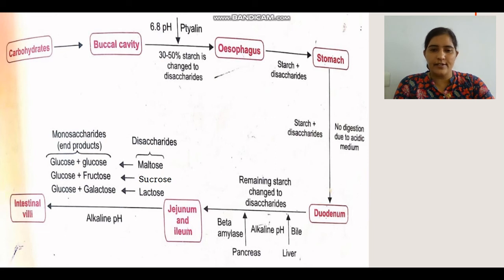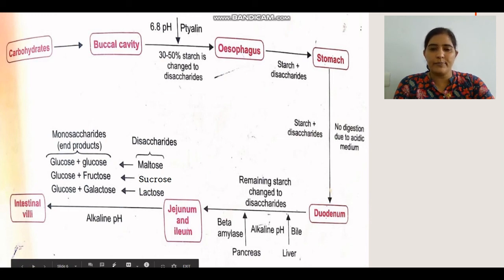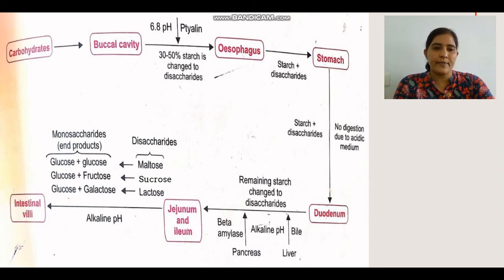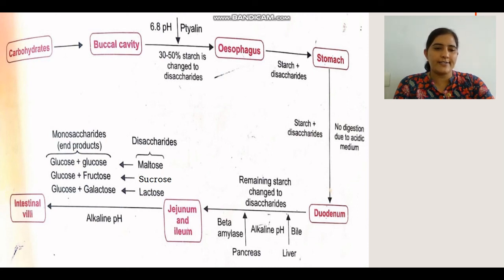The enzymes in the duodenum work in an alkaline pH, because the liver secretes bile juice creating an alkaline medium. Disaccharides then enter the jejunum and ileum for further digestion. Maltase acts on maltose to yield glucose and glucose. Sucrase acts on sucrose to give glucose and fructose. Lactase acts on lactose to give glucose and galactose. All these enzymes work at alkaline pH. Finally, these monosaccharides are absorbed into the intestinal villi.